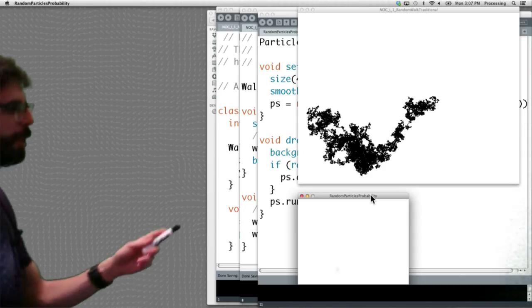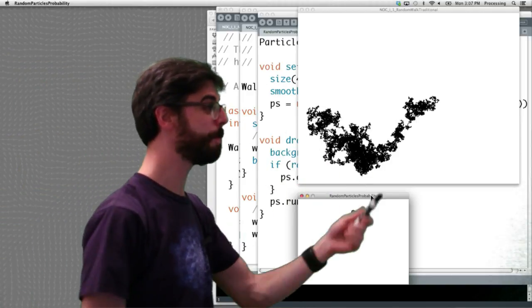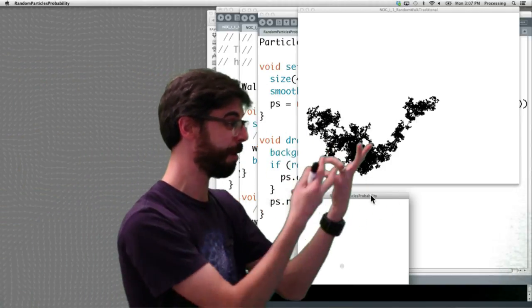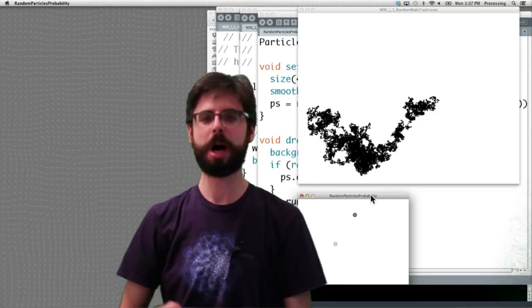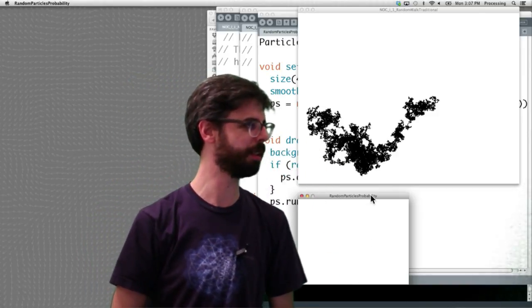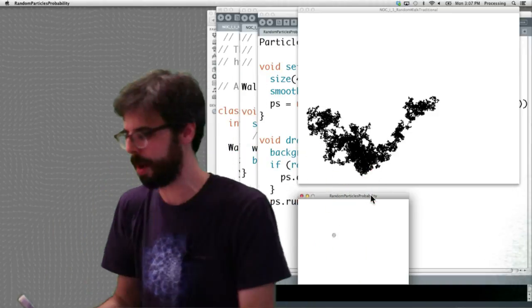But we're going to just start with probability. Now, let's go over here and visit our random walker. It's been running for quite a while and we can see that it's creating this kind of nice random pattern. So what is the thing, how does this random walker relate to probability?